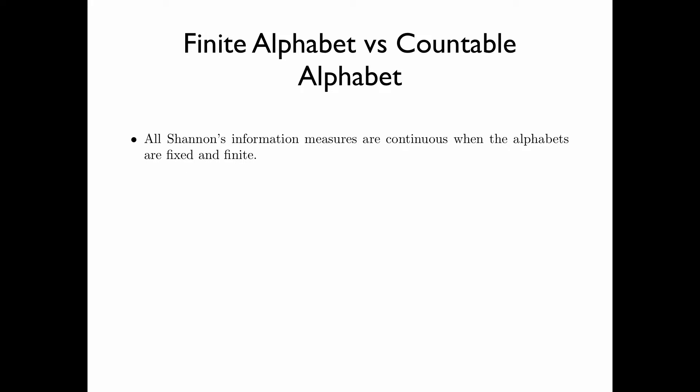It turns out that when it comes to continuity, there's a huge difference between finite alphabets and countable alphabets. First of all, all Shannon's information measures are continuous when the alphabets are fixed and finite. This is precisely because all the summations are finite.